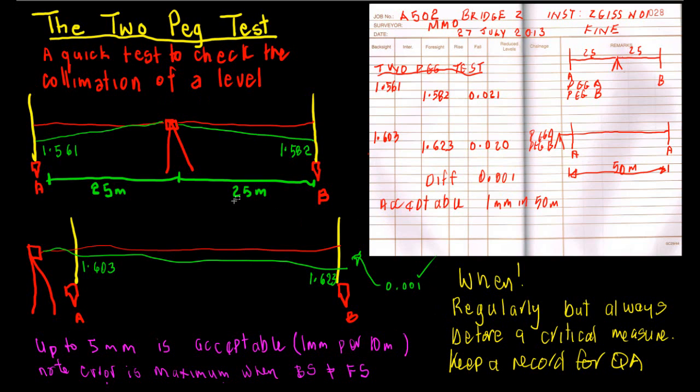Which is quite good, and we must remember that that is only when the backsights and foresights are not equal. So when we are leveling, we try most of the time to keep our backsights and foresights equal, thereby reducing the effect of any collimation error that may be present.